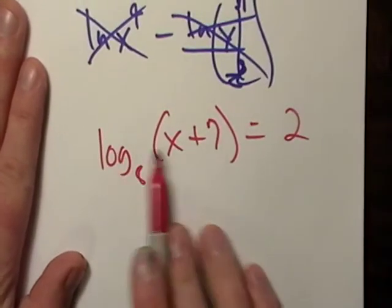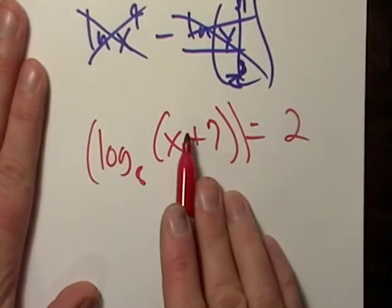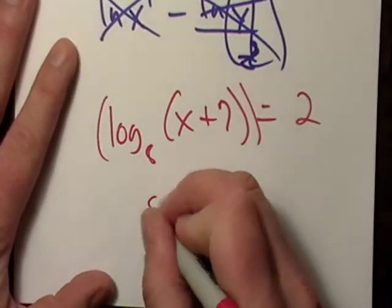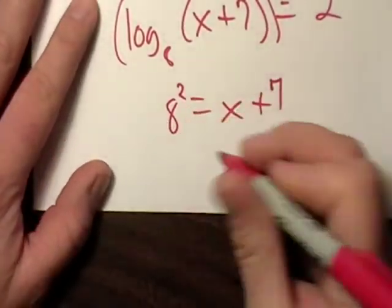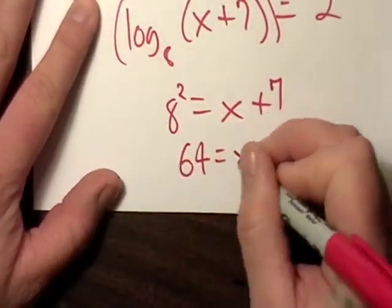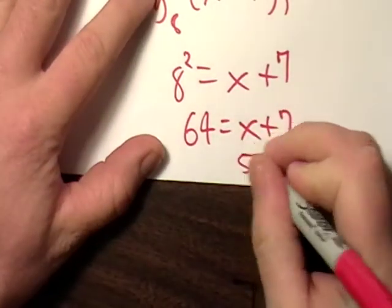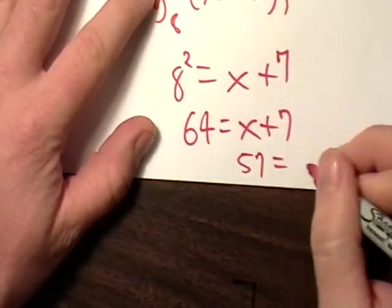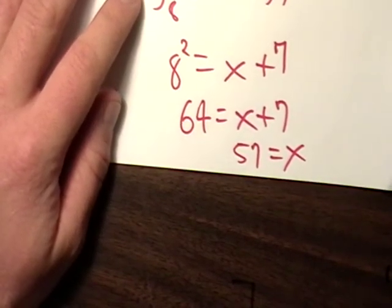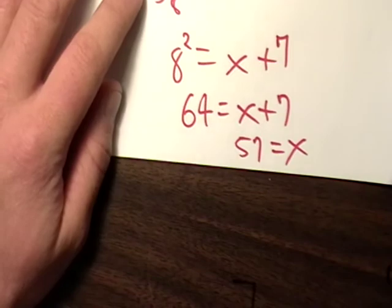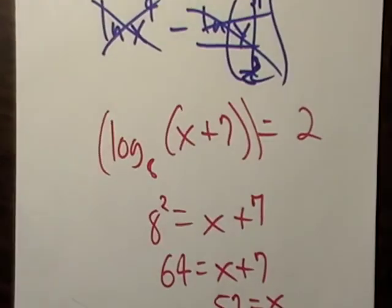Basically, this says eight. We know what this section, this part of the thing means, right? That's eight to the second power equals x plus seven. So we go eight squared equals x plus seven. So we get 64 equals x plus seven. 64 minus seven, that's 57. All right, cool. I'm good. So I mean, this isn't too hard.